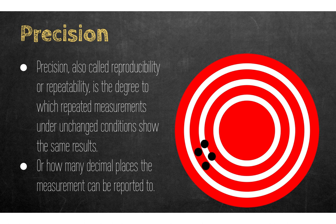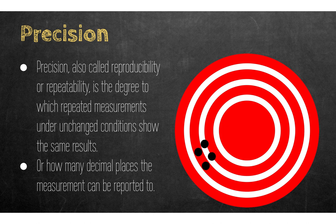The other part of accuracy is precision. Precision is also called reproducibility or repeatability — it's how closely you can obtain the same measurement when repeating trials over and over. In the darts analogy, if the darts didn't hit the bullseye but all four throws landed close to each other, they are not accurate but they are precise.